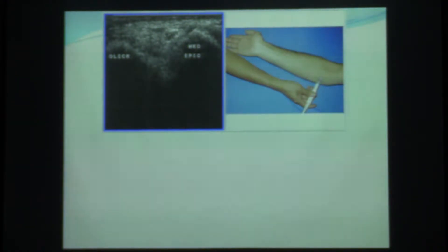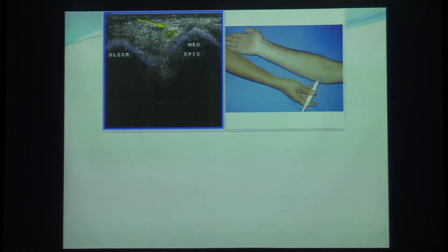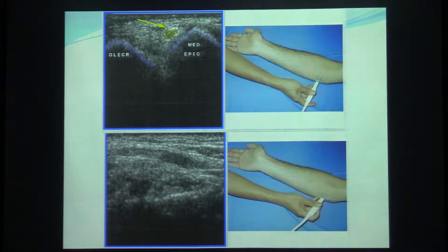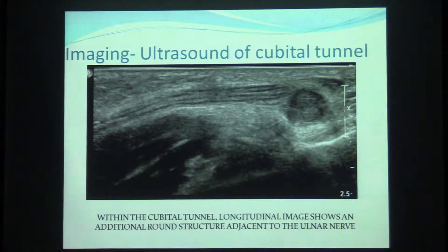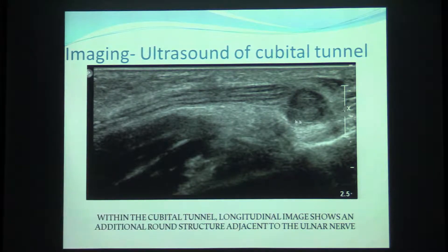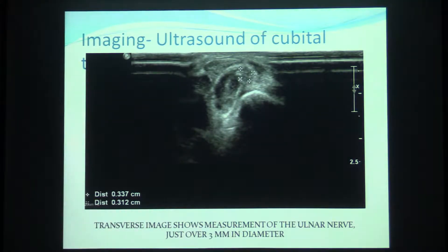This is the normal anatomy of the cubital tunnel. We have the olecranon, the medial epicondyle, and the ulnar nerve depicted here in longitudinal view — this is normal anatomy. Now in our patient, we have an oval, round mass in longitudinal view, and the ulnar nerve is very adjacent to this mass, so most probably this mass is causing the symptoms. Here in the transverse view, we see the ulnar nerve with no separation planes from the mass.